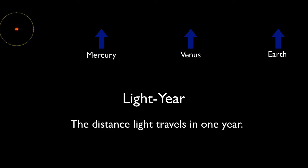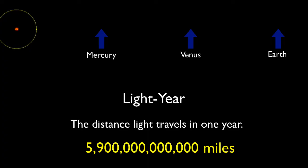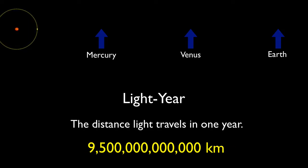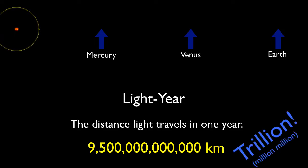A light year is the distance light travels in one year. It's far. Why? Because light travels so fast. One light year equals about 5.9 trillion miles or 9.5 trillion kilometers. That's not million, nor billion. I'm telling you trillion, which is a million million.